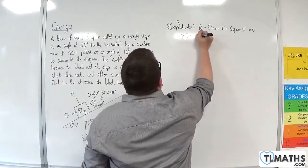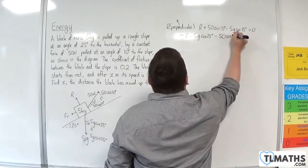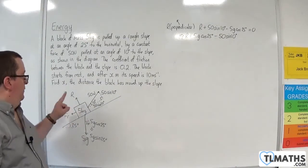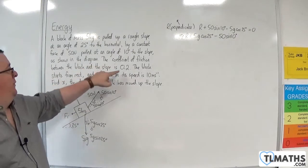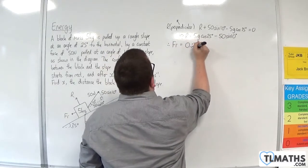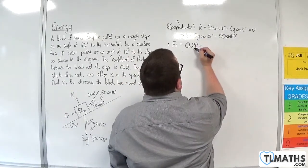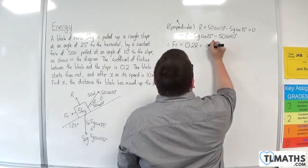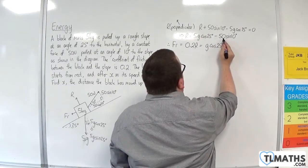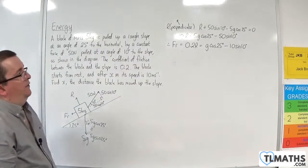So R is 5g cosine 25 take away 50 sine 10. That's the normal reaction force. The coefficient of friction is 0.2, so friction equals 0.2R, which equals 0.2 times that expression. 5 times 0.2 is 1, so this gives g cosine 25 degrees, and 0.2 times 50 is 10, so take away 10 sine 10 degrees. That's the frictional force.